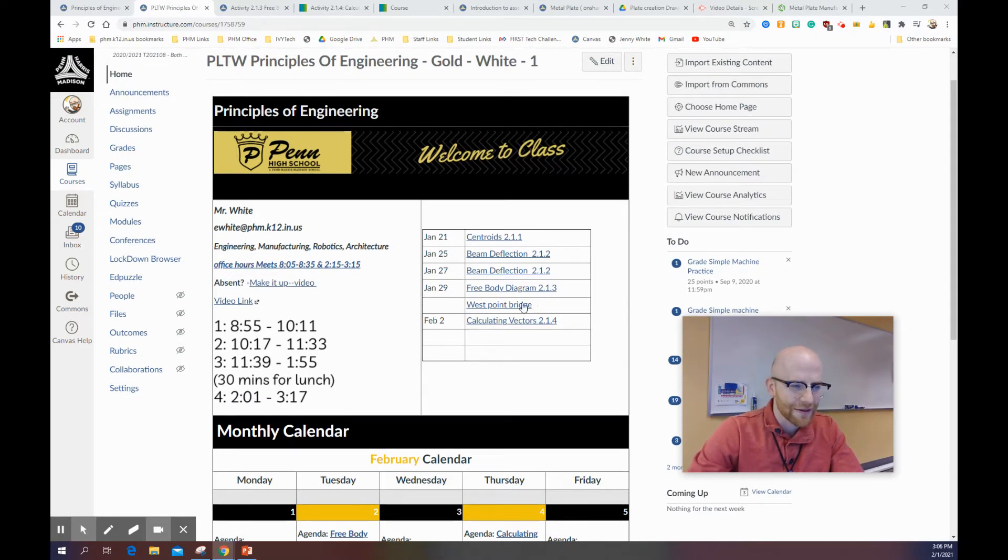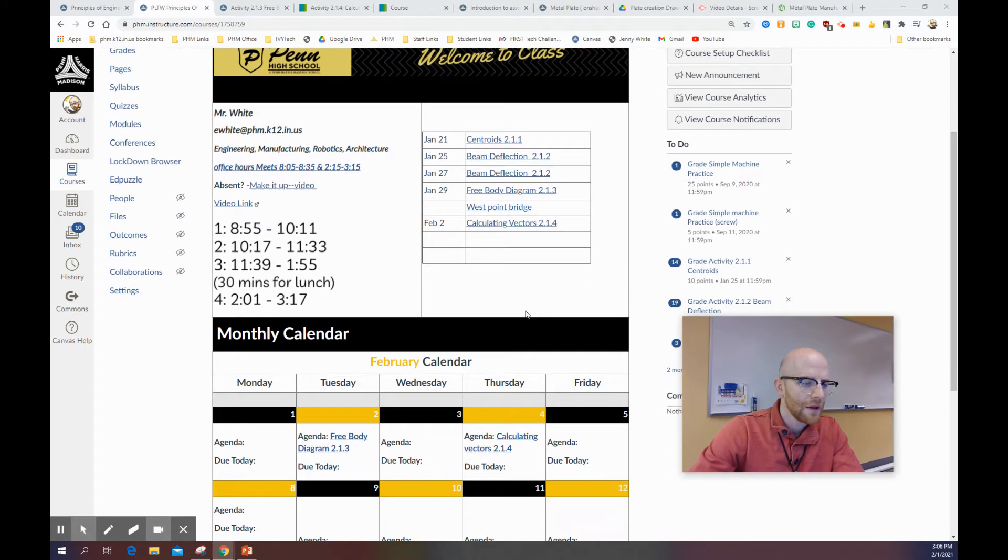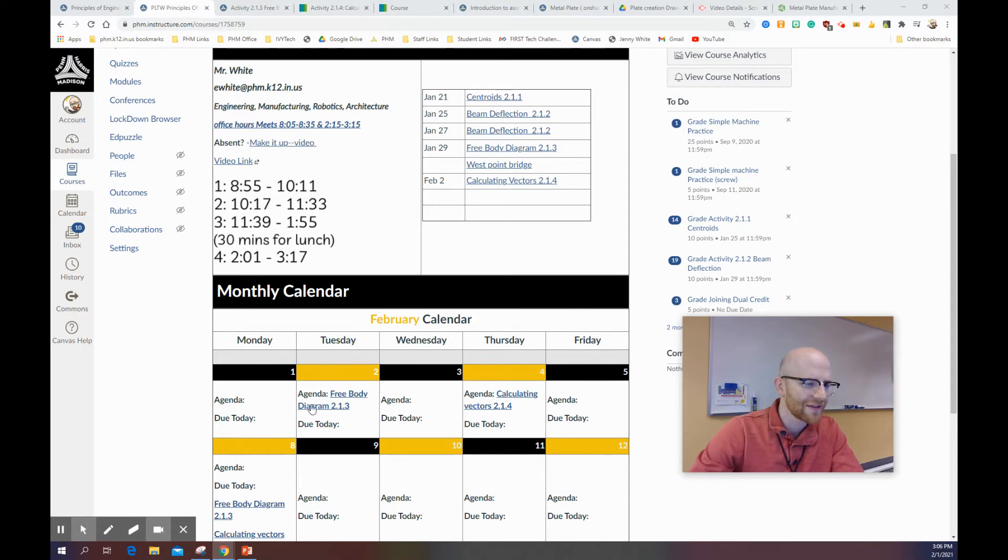We are going to go over a free body diagram. That's something we're going to do this week. We kind of touched on it last week, but not enough to actually submit anything. But there is a Google assignment attached to the free body diagram 213. There's the West Point bridge design. If you haven't had a chance to play around with that, maybe you can figure out how to download that. And then there's calculating force vectors 214.